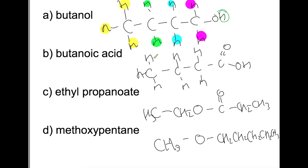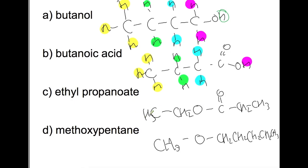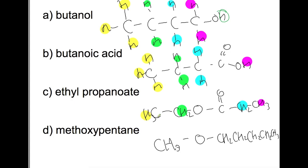Having a look at butanoic acid, we'll have one environment for the CH3, one for the CH2 attached to the CH3 group, one for the CH2 attached to the carboxyl group, and then finally one for the OH group. Looking at ethoxypropanoate, we've got our CH3 here, then a CH2, then another CH2 which is different in connectivity, and then finally our CH3 at the other end, which is again different because it is not in an identical environment.